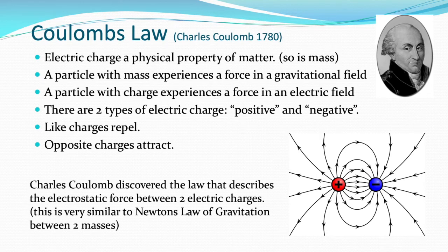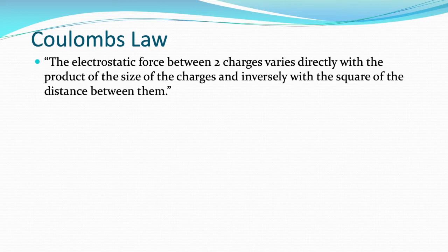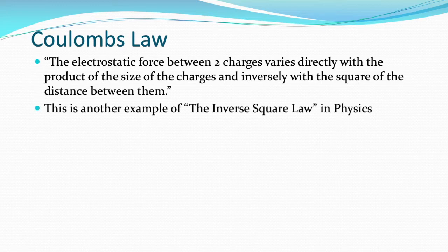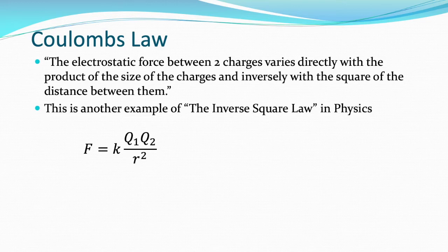Charles Coulomb discovered the law that describes the force between two electric charges, which is very similar to Newton's universal law of gravitation between two masses. The electrostatic force between two charges varies directly with the product of the size of the two charges and inversely with the square of the distance between them. This is another example of the inverse square law in physics. There is the Coulomb's law relationship: F equals K Q1 Q2 over R squared.